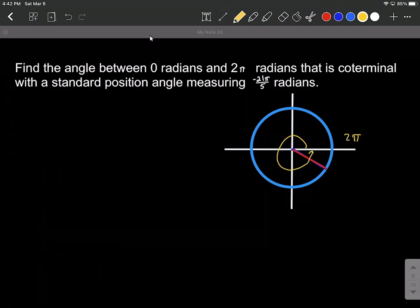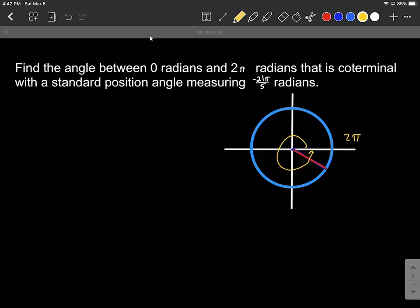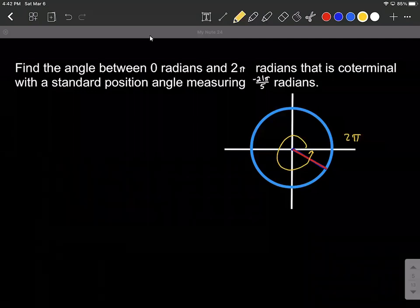So that means if we're adding two pi to an angle, we're finding a coterminal angle that's bigger. If we're subtracting two pi, that means it's just rotated around in the negative direction, we're finding a smaller or more negative coterminal angle.